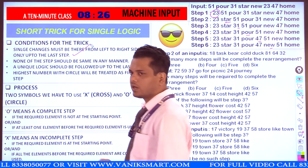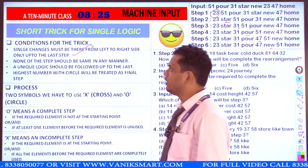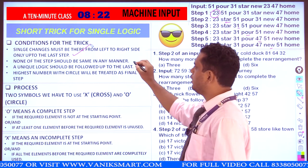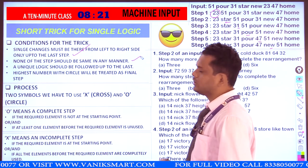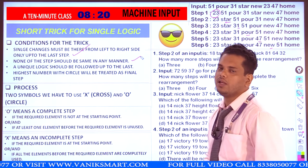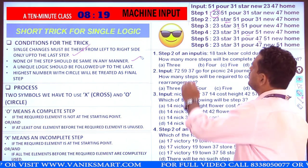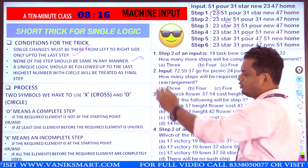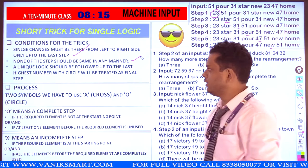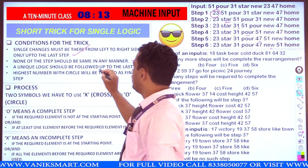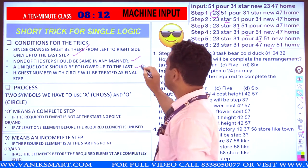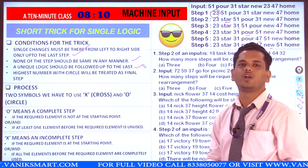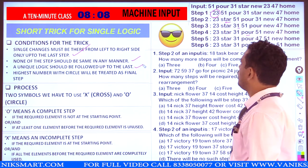वो कहीं भी satisfy नहीं कर रहा। ठीक है — none of the steps should be same in any manner. कोई भी step यहाँ पर equal नहीं होना चाहिए। A unique logic should be followed up to the last — unique logic means logic can be anything, friends.